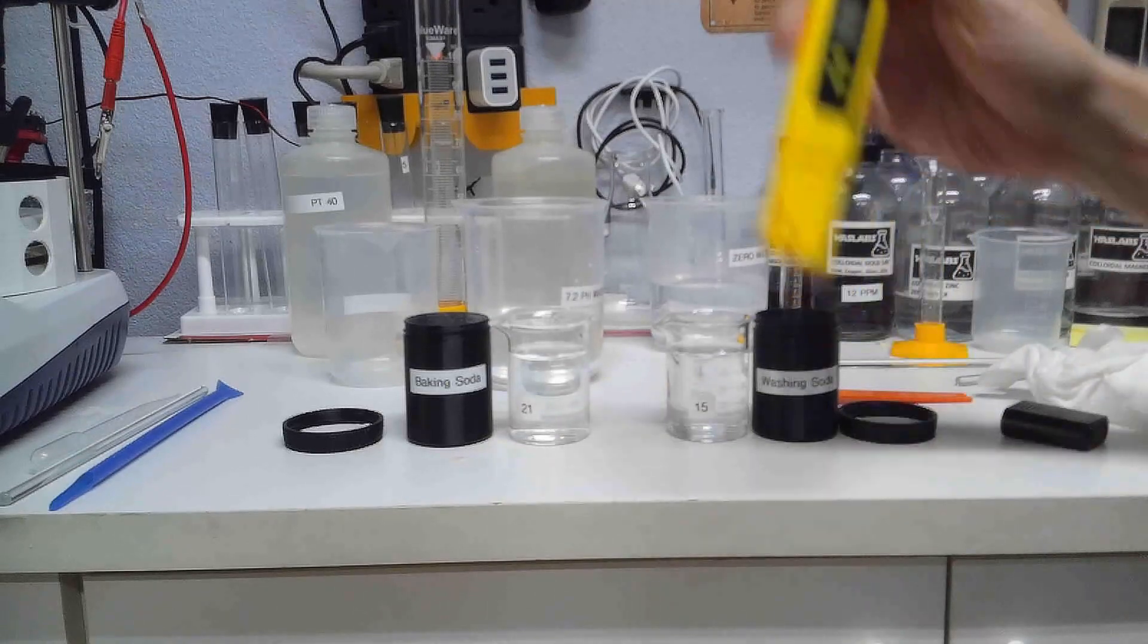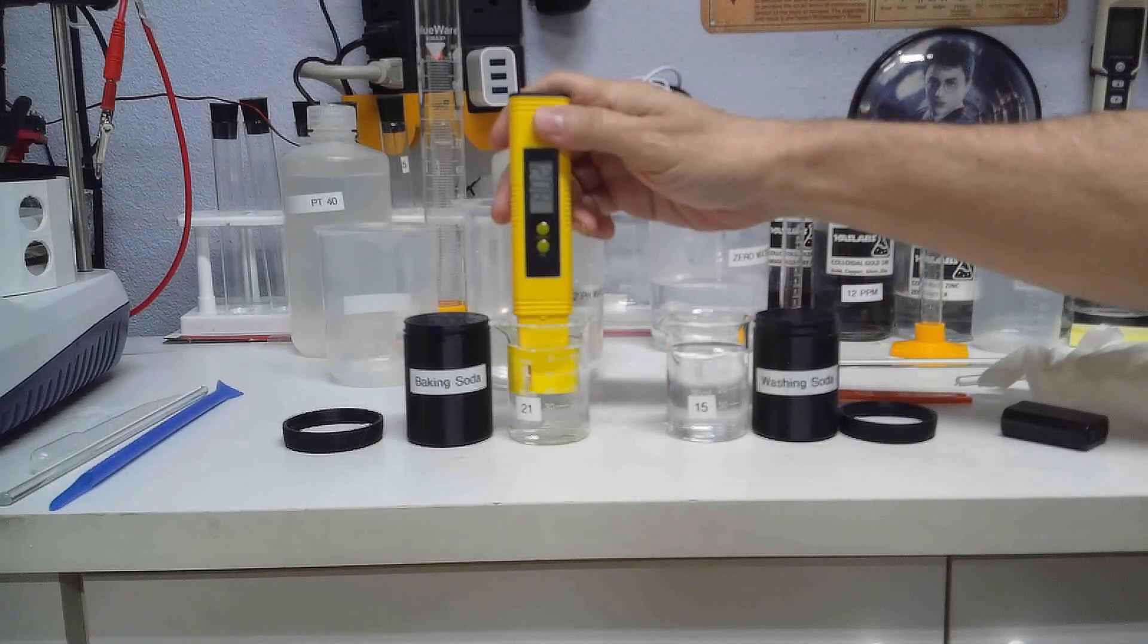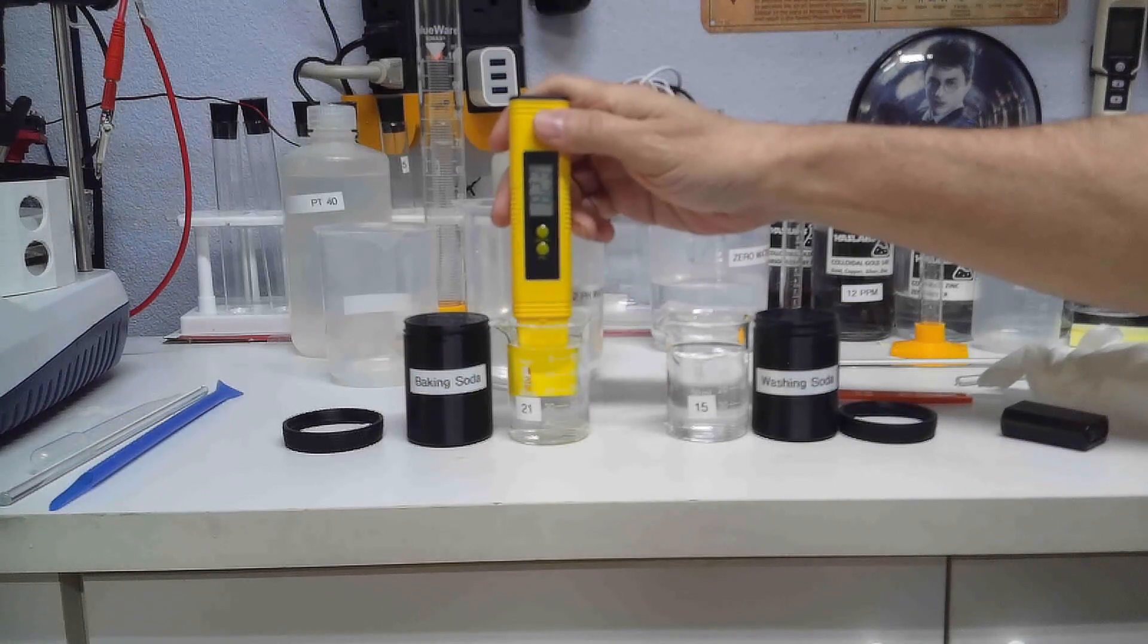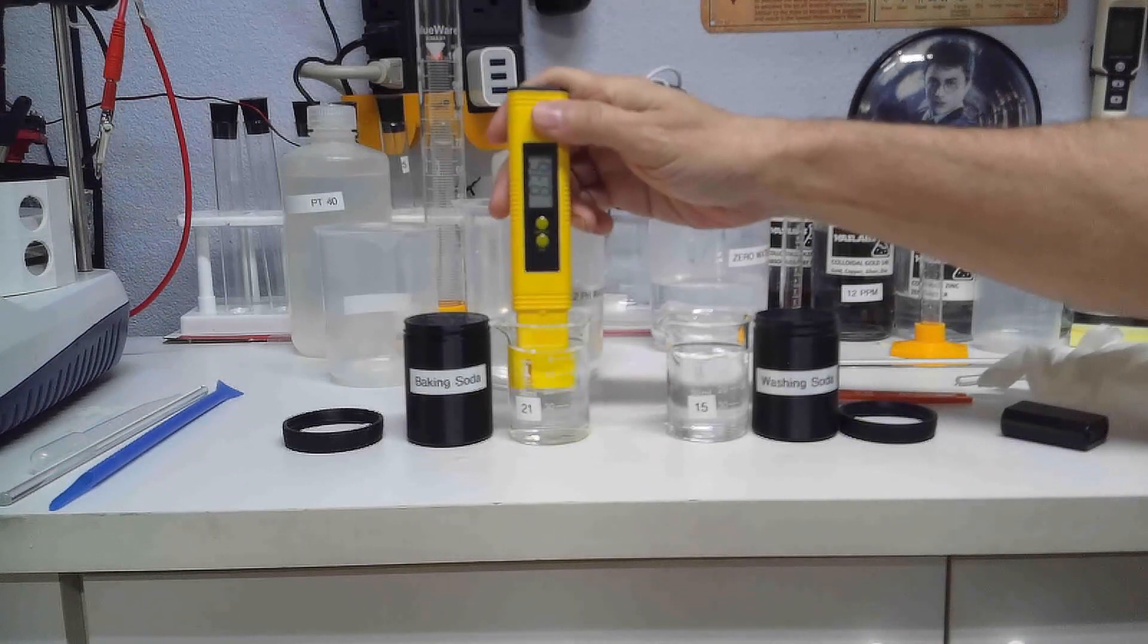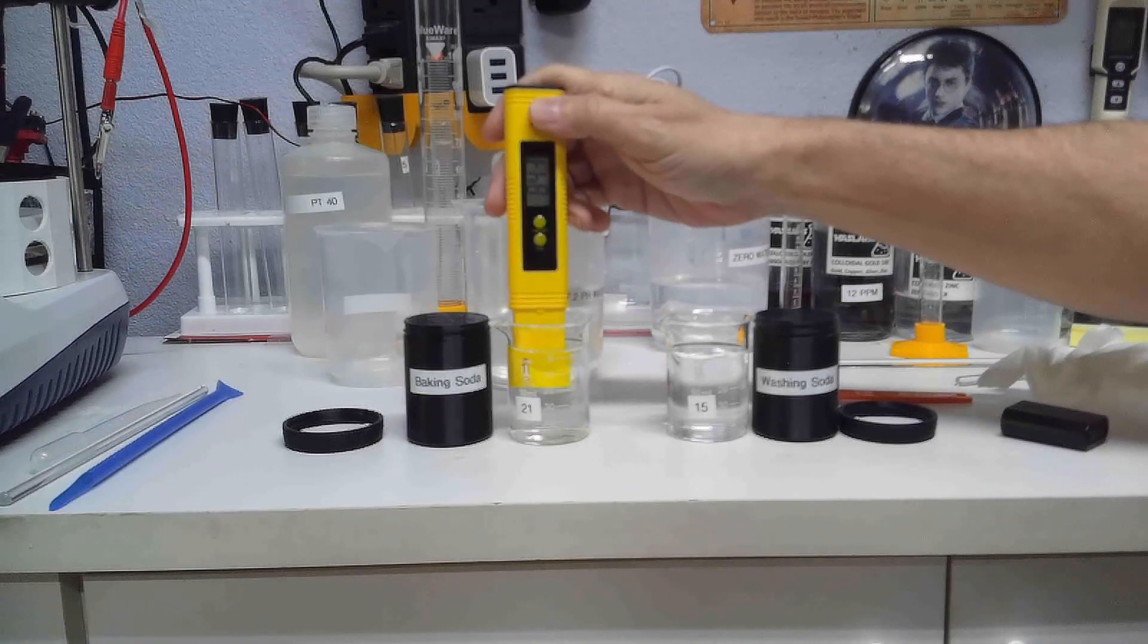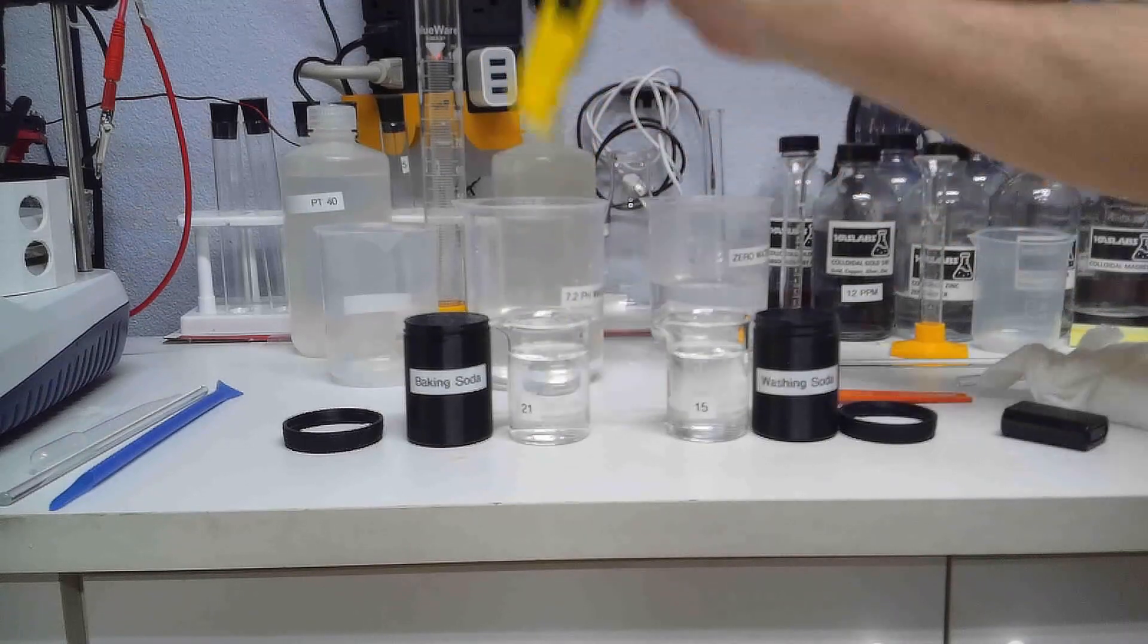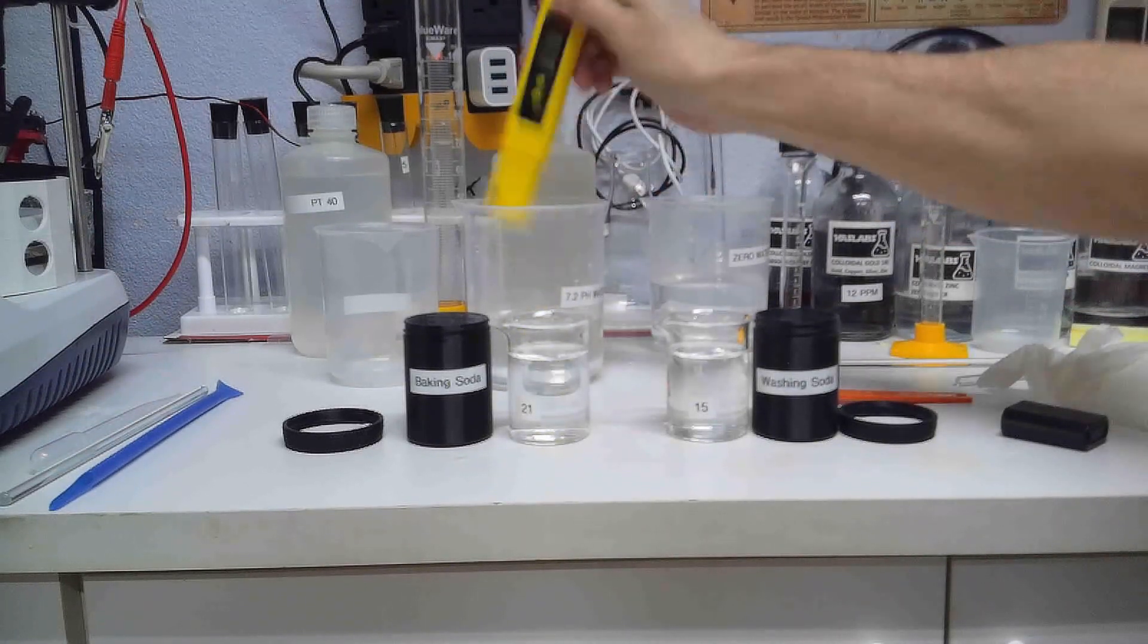And now we're going to put our meter in here. All right, this is the baking soda one and it is going to a reading of 8.4, 8.4 pH. All right, now we're going to just rinse this off briefly in 7.2 pH water.